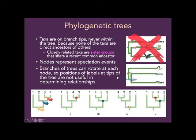The branches of trees can rotate at each node, so there are multiple trees that mean the same thing. You'll draw trees whichever way is most convenient for you, and you need to be able to figure out if the tree you've drawn is the same as the tree other people have drawn — so you have to be able to rotate the trees. The easiest thing is to think about what's happening in the tree and talk it through to see if the relationships are the same.